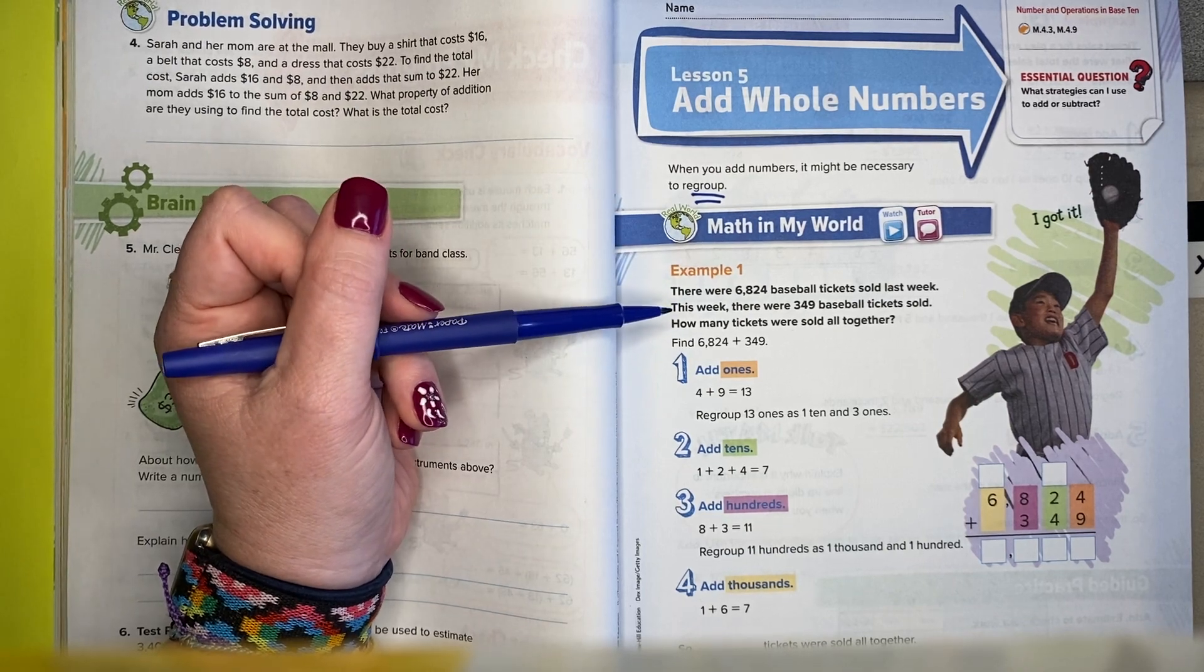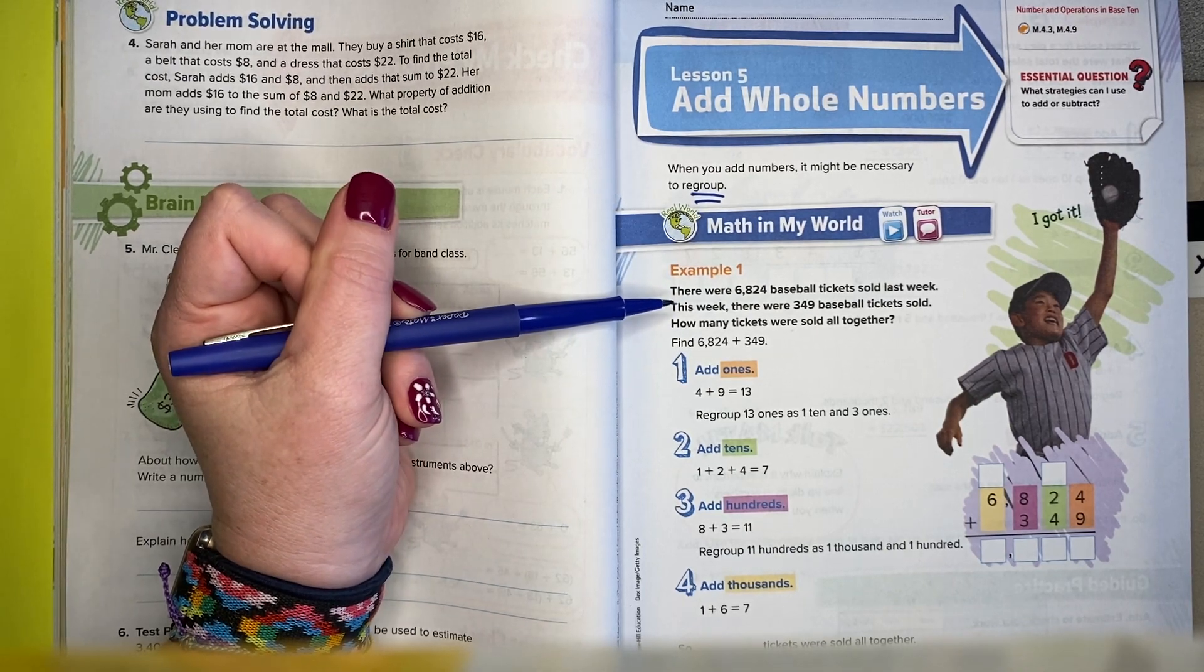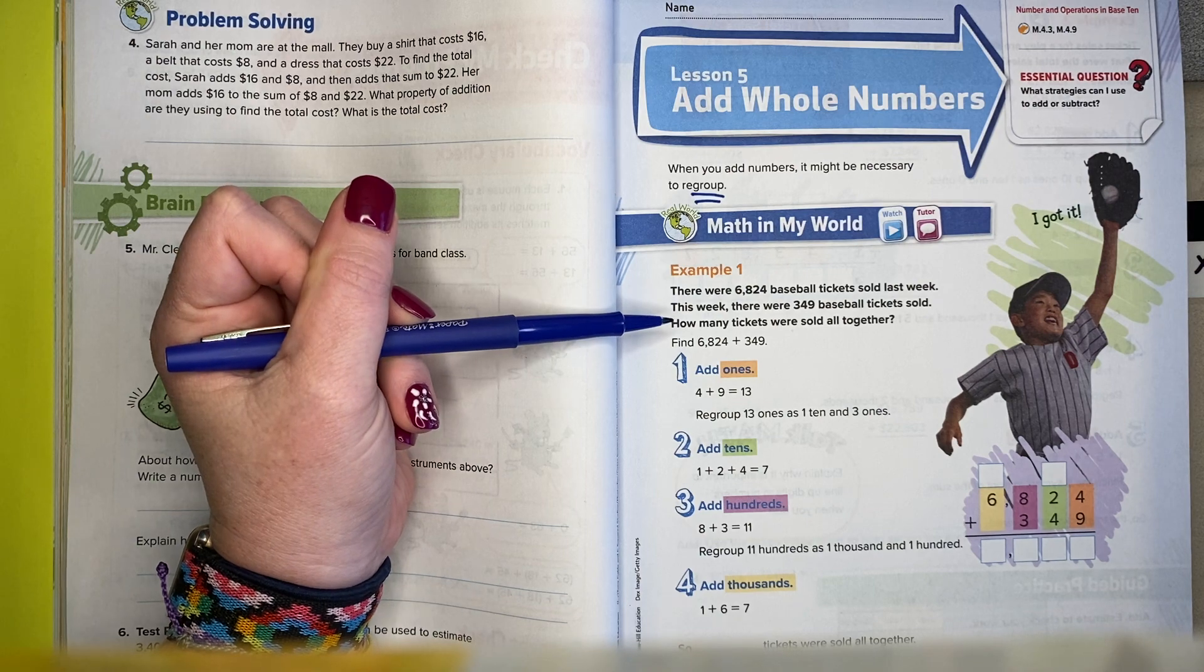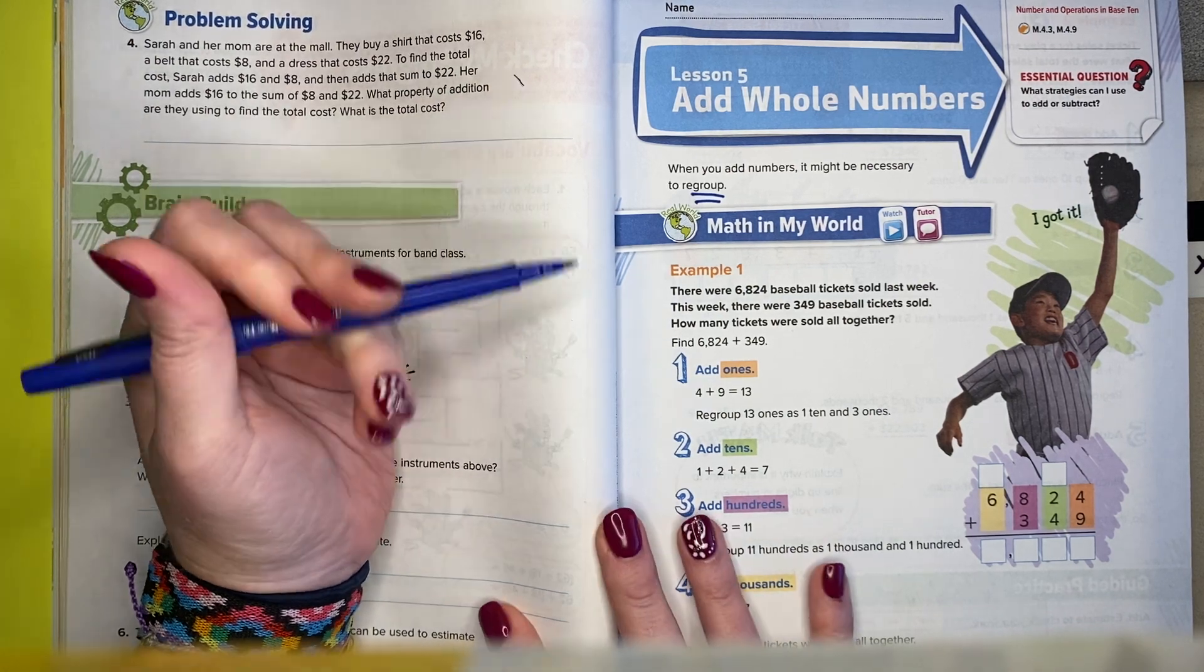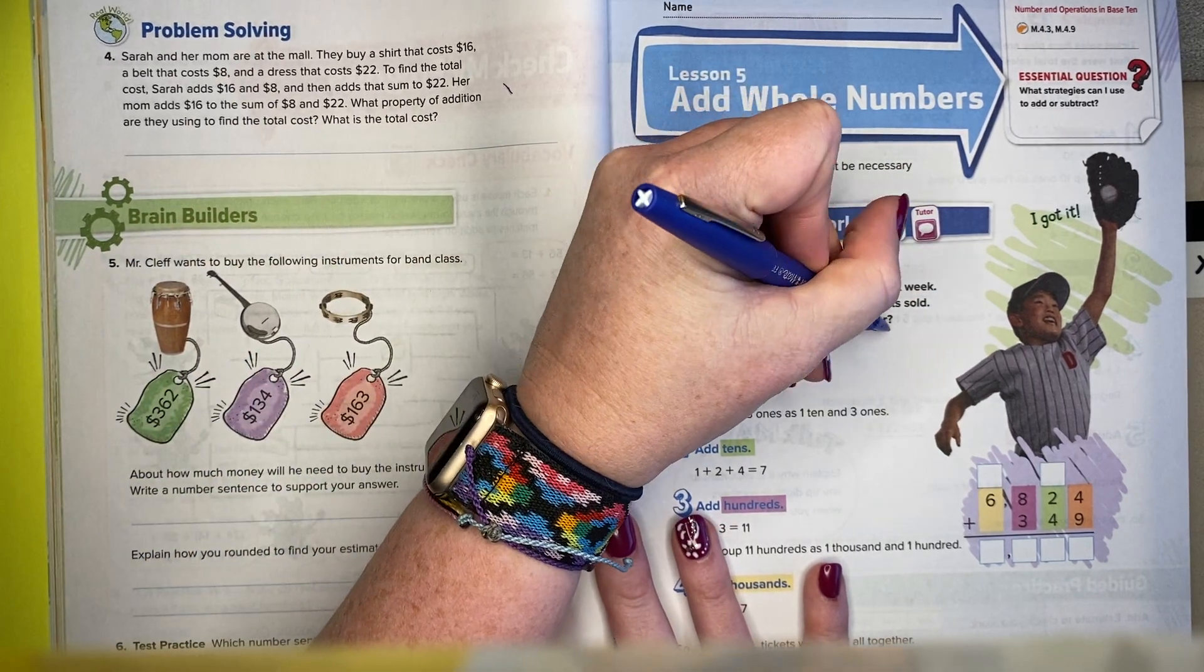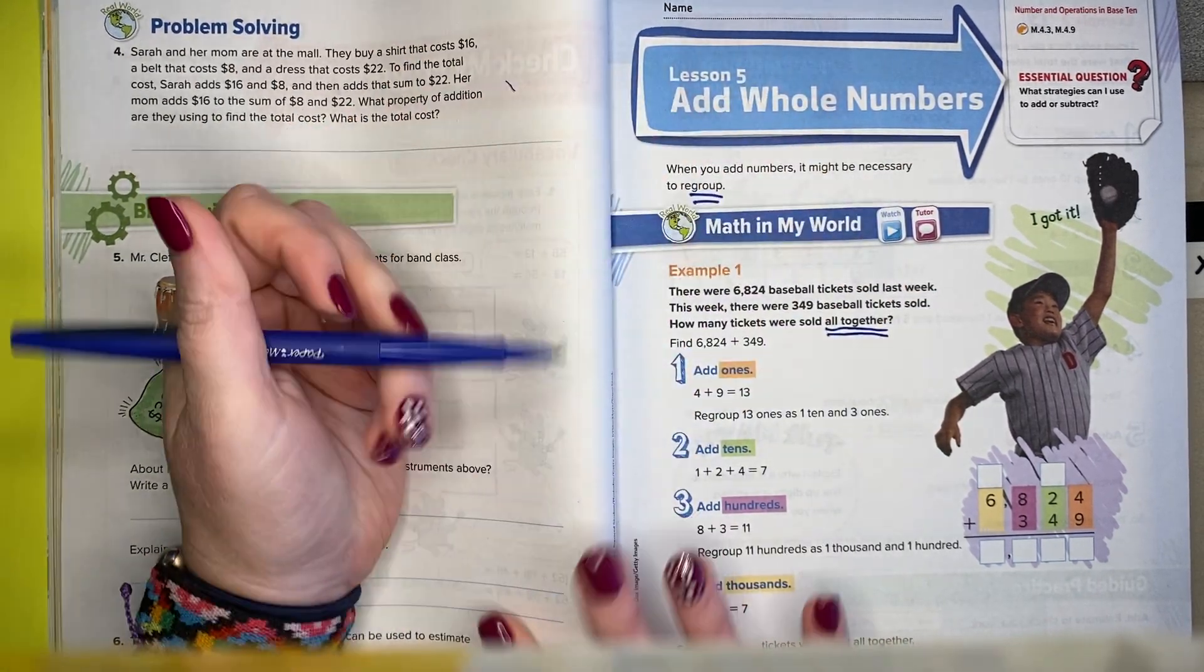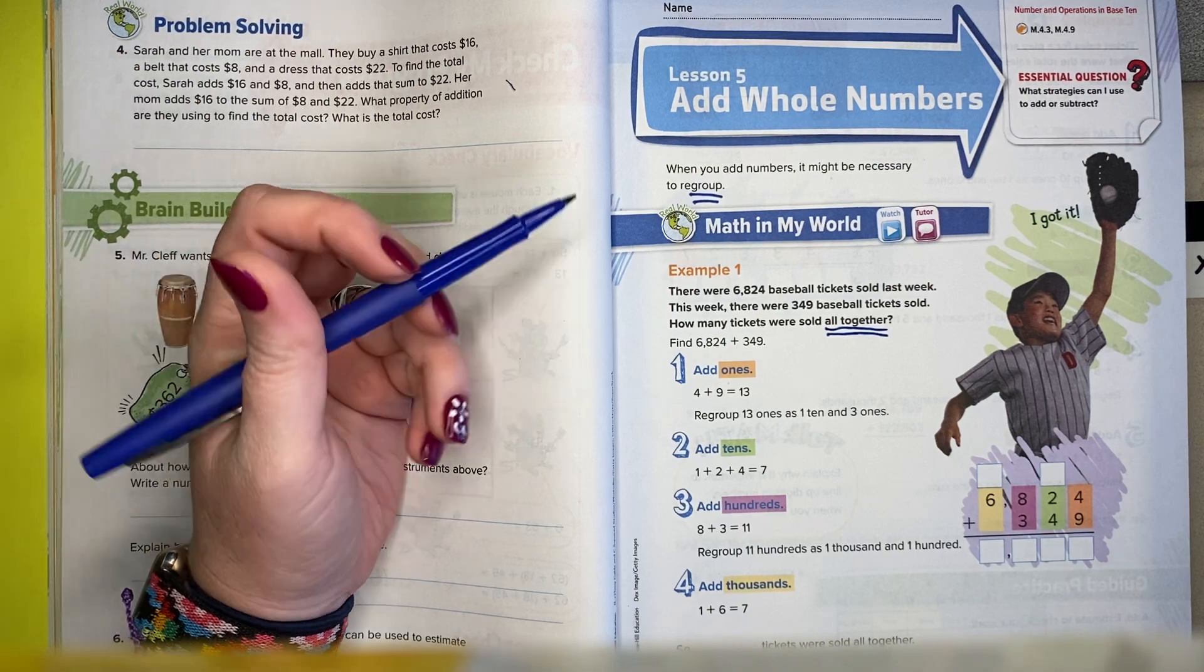There were 6,824 baseball tickets sold last week. This week, there were 349 baseball tickets sold. How many tickets were sold all together? So that means we're going to add.